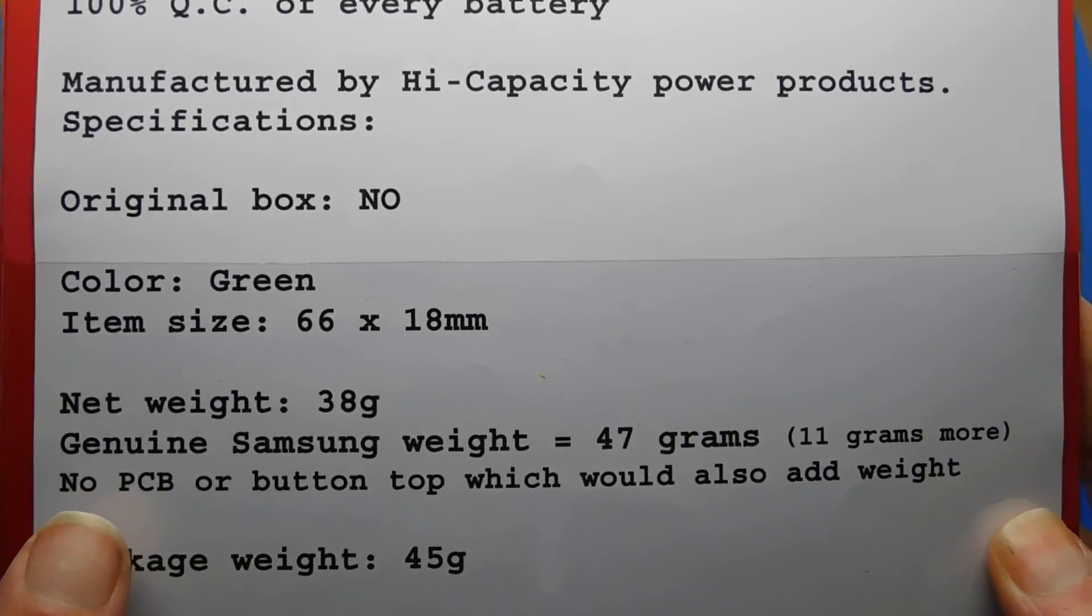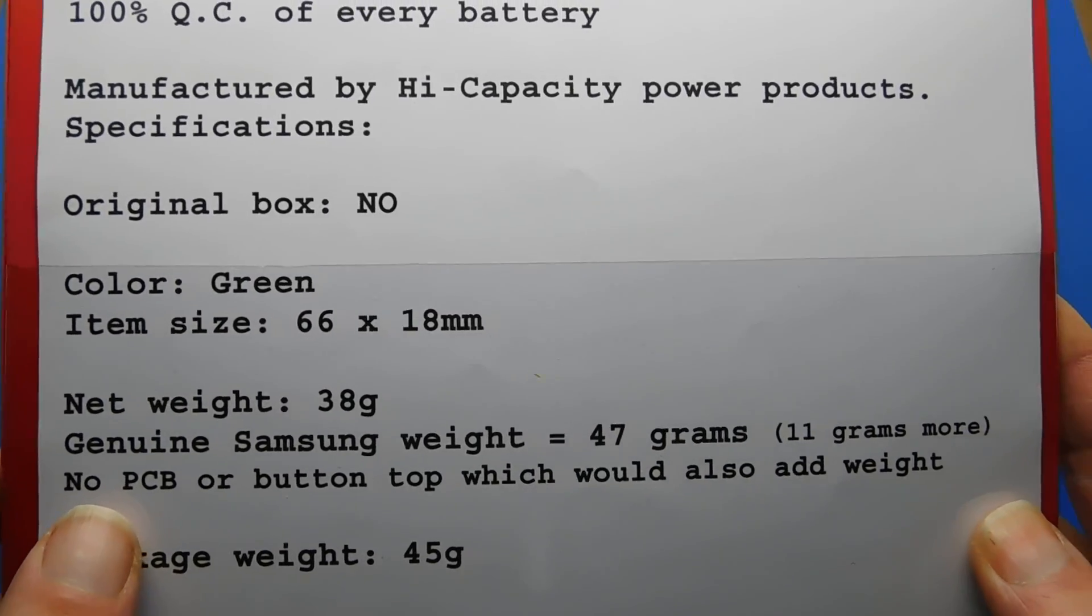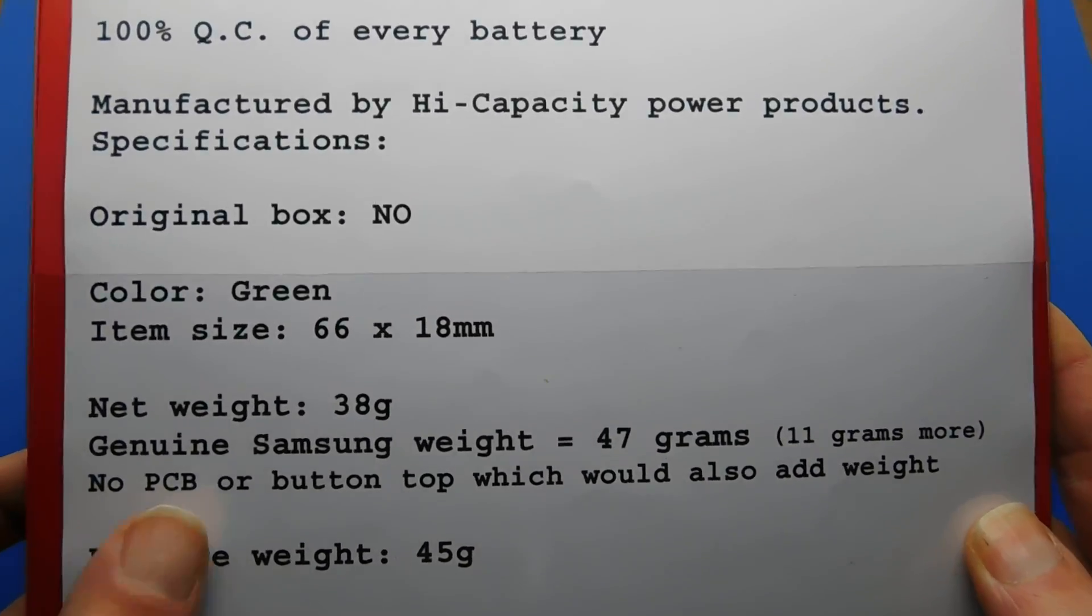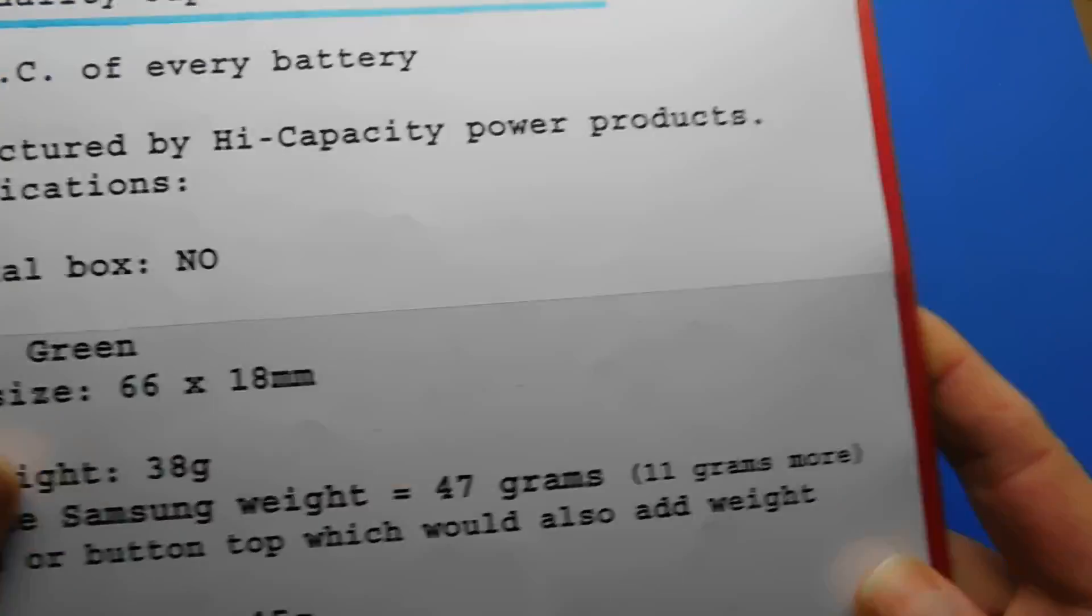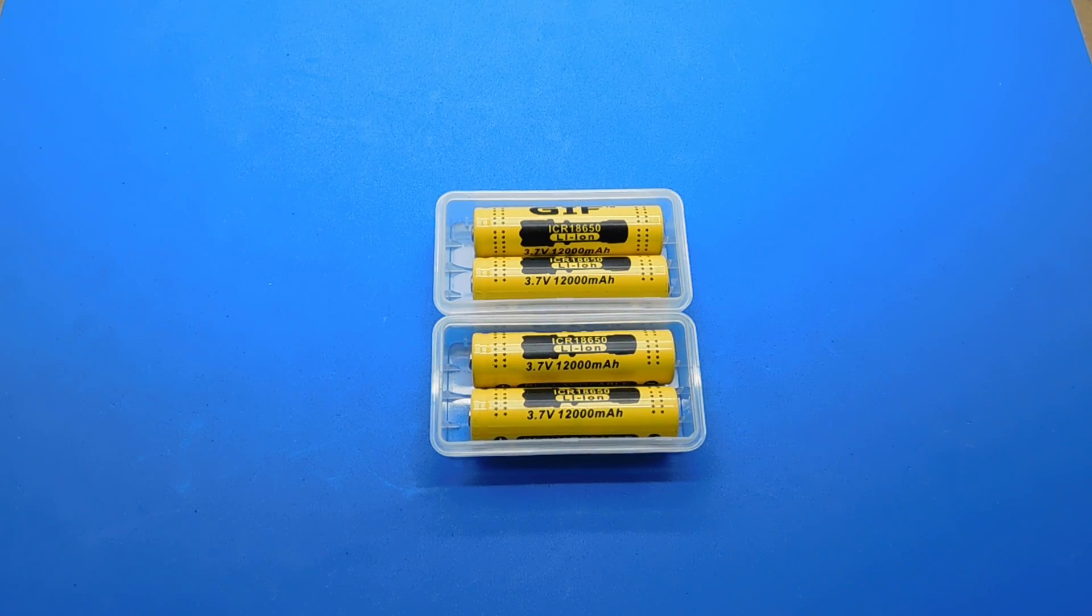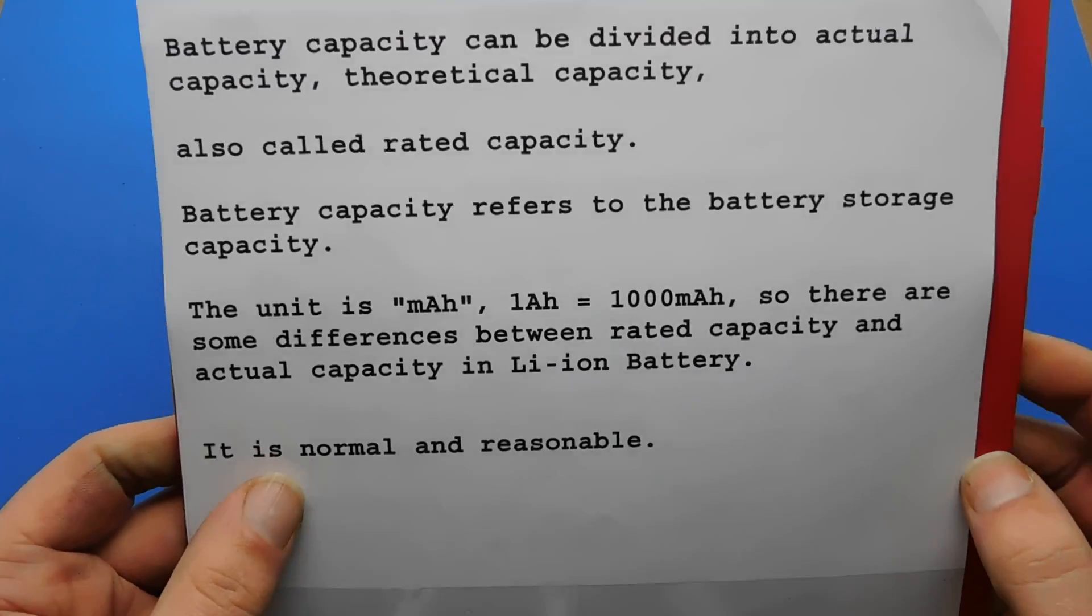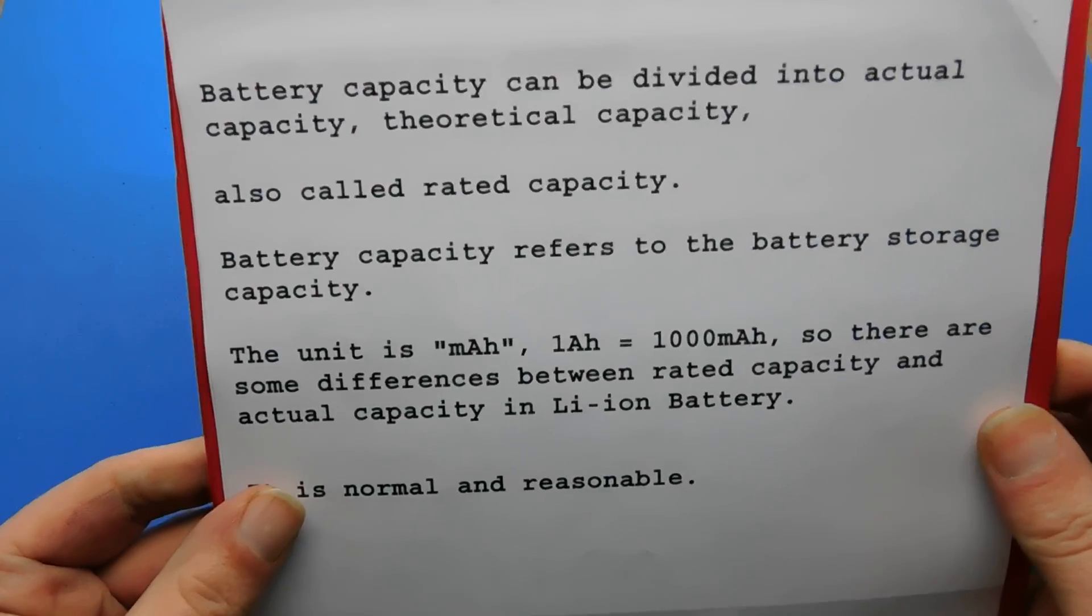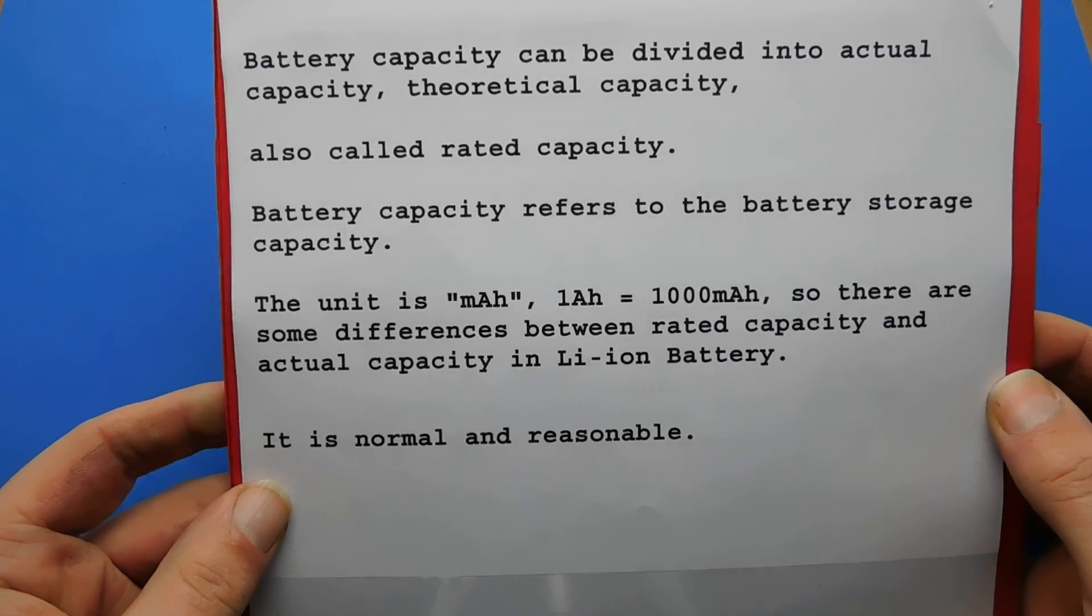The PCB or button top would also add weight, so on the button top there's the button top and the PCB which would add a couple of grams. This is a new disclaimer they seem to be putting on the bottom of their descriptions. I don't know what that's supposed to mean, it's just gobbledygook to me.